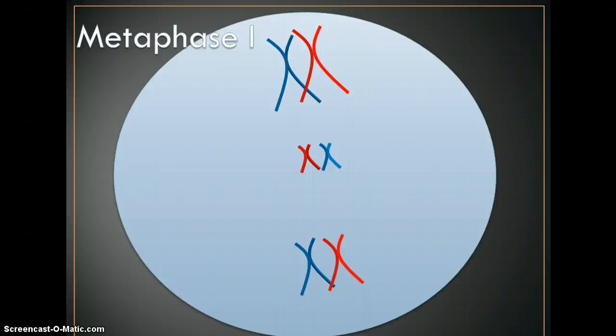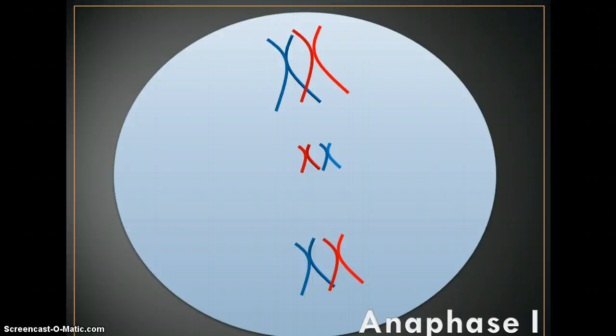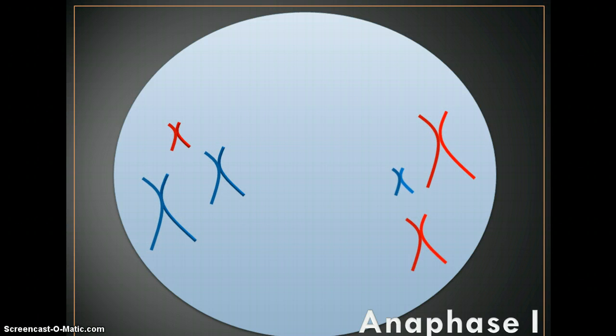So now we move on to anaphase. Anaphase one is where the tetrads are pulled apart. Notice here that now we've moved from six chromosomes to three.